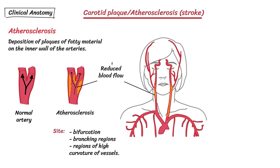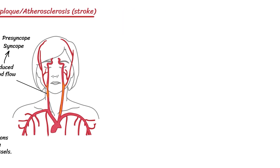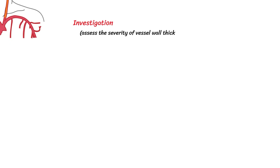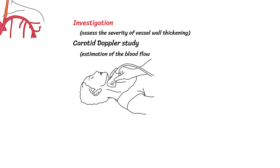This can result in presyncope or even syncope. Concerningly, if a piece of the plaque ruptures, breaks off, and migrates up, it can occlude the cerebral arteries, causing an ischemic stroke. To assess the severity of vessel wall thickening in the carotid arteries, a Doppler study can be used to enable estimation of blood flow through the vessel.